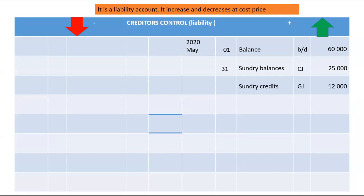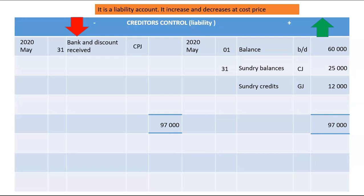What reduces this account will be payments made to the creditor. This includes any discount received from the creditor, because it is recorded in the Cash Payment Journal (CPJ) as part of the payment. The total of Creditors Control plus discount received in the CPJ amounts to 65,000.